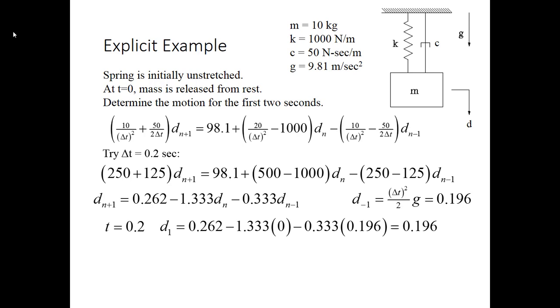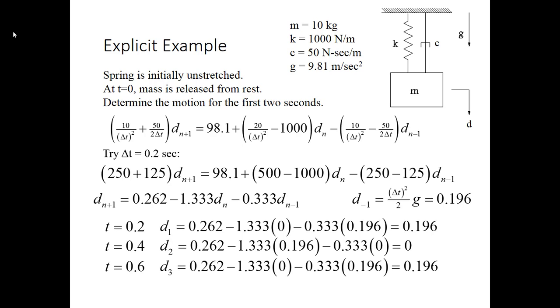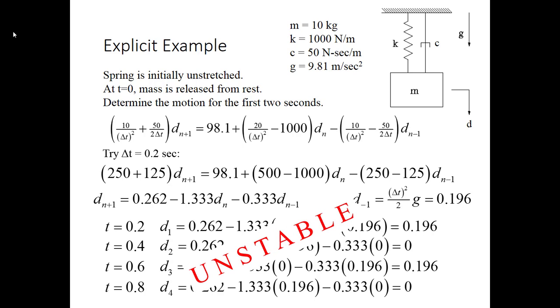So at my first time step, t equals 0.2, d1 ends up becoming 0.196. At 0.4, it becomes 0. At 0.6, it becomes 0.196. At 0.8, it's 0. We're just flipping back and forth. This is not a stable analysis. This is what I mean by if your time step is too big, your results will blow up. So this one didn't go to infinity, but it's simply alternating back and forth between two positions. Remember, I didn't drop damping here, so this is not just calculating it flipping back and forth off the spring. This is an analysis that has gone awry.